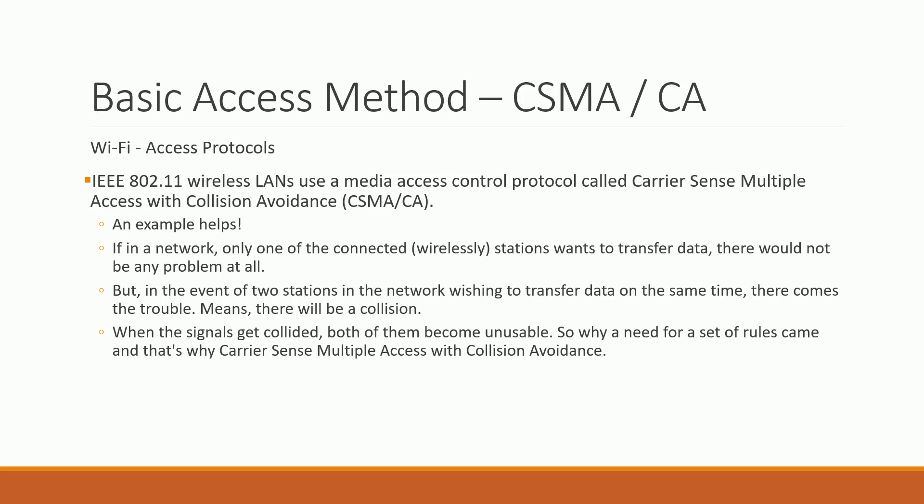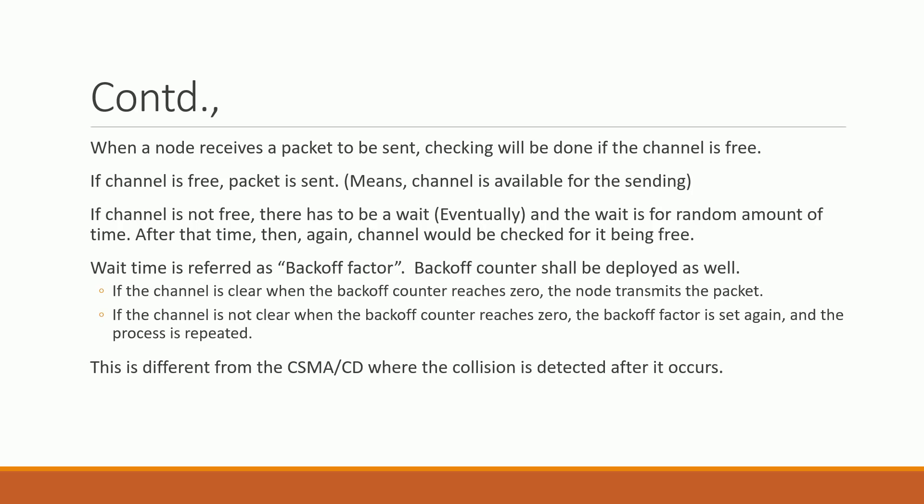Now let's talk about access methods supported for Wi-Fi. The first and most prominent is CSMA/CA — Carrier Sense Multiple Access with Collision Avoidance. This should not be confused with CSMA/CD (Collision Detection). Collision detection happens only after a collision occurs; collision avoidance happens well before the collision — it is prevented. When multiple stations want to transfer data at the same time, we need a method to avoid this collision, and that protocol is CSMA/CA.